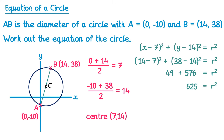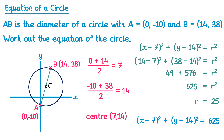Adding 49 and 576 gives 625, and square rooting both sides gives plus or minus 25. Again, we can't have a negative radius so it's 25. Now that we know the center and the radius we can write the equation: (x minus 7) all squared plus (y minus 14) squared equals 25 squared, which is 625.